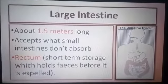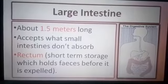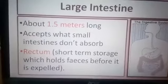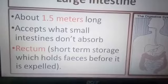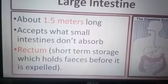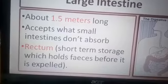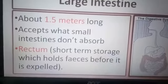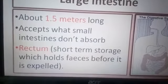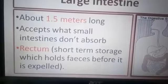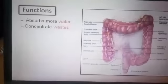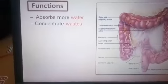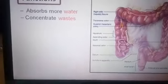Now the large intestine, shown here in brown, is about 1.5 meters long. It accepts material which is not absorbed by the small intestine. The waste material or undigested food is temporarily stored in the last part of it, which is called the rectum — the short-term storage of fecal matter. The large intestine mainly absorbs more water and concentrates the waste.